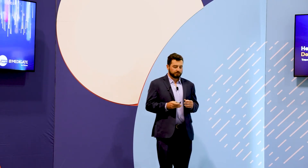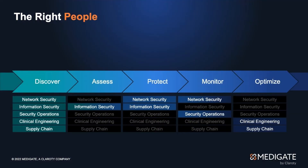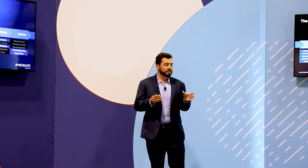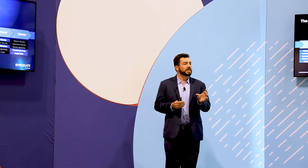What this involves is the right people. When we go through a maturity journey, we need buy-in throughout the entire organization — the network security team, the information security team, security operations, clinical engineering, as well as the supply chain. This is the discover phase. You'll see a theme throughout this presentation: discover, assess, protect, monitor, and optimize. As we move through this journey, we have an organizational plan laid out with everybody, and as we move through each stage, it's a different team we'll be working with.